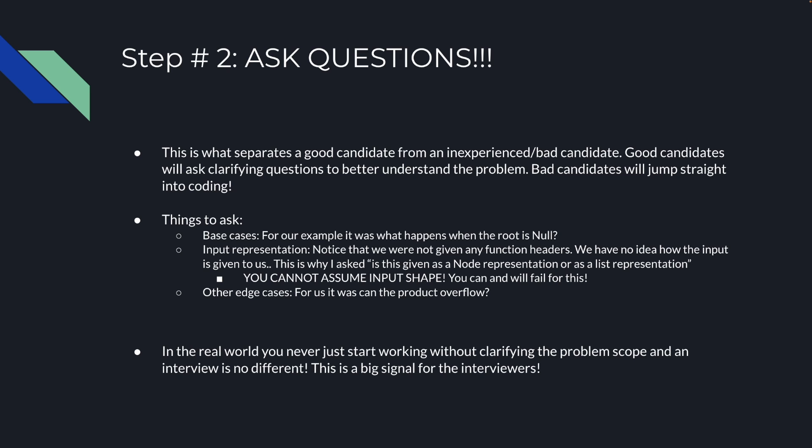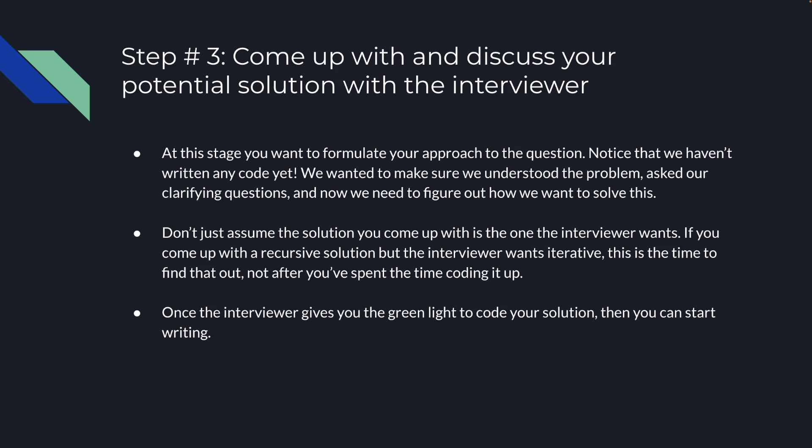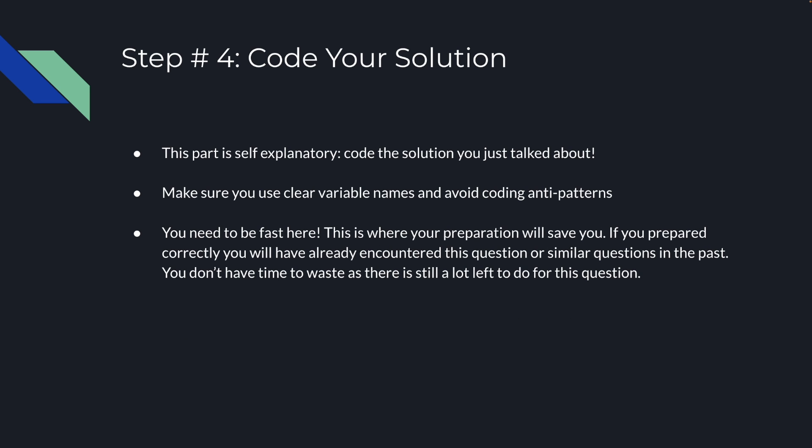Step 3: come up with and discuss your potential solution with the interviewer. Formulate your approach before writing any code. Don't assume the solution you come up with is what the interviewer wants — if you come up with a recursive solution but they wanted iterative, find out now, not after you've spent time coding it. Once the interviewer gives you the green light, you can start writing. Step 4: code your solution. Use clear variable names, avoid anti-patterns, and be fast — your preparation will save you here.